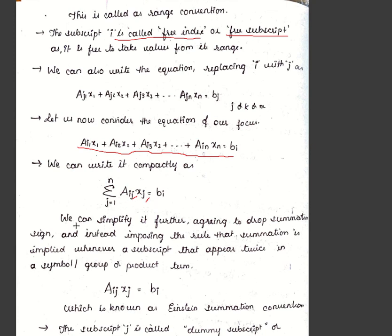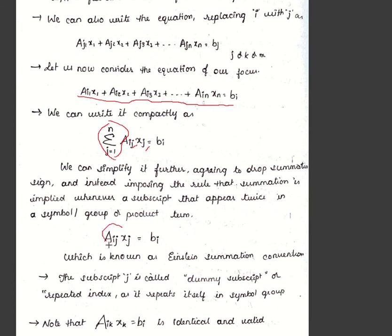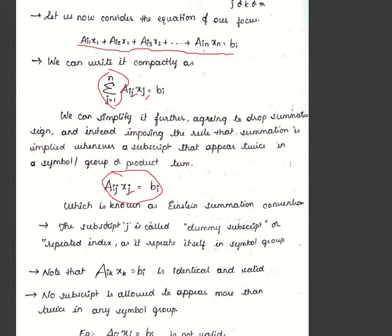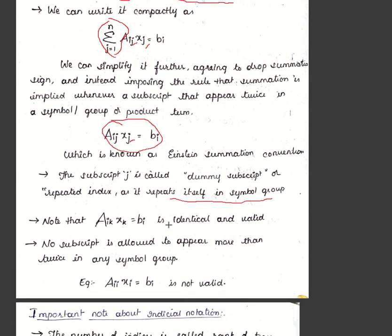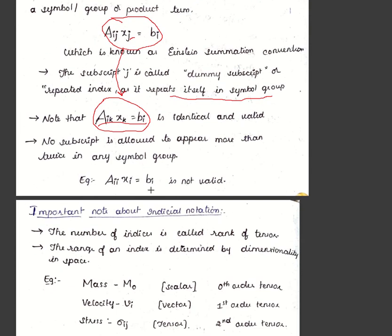According to Einstein's summation convention, we drop the summation sign and write simply aij·xj = bi, where j is a repeated (dummy) index implying summation. The subscript j is called a dummy subscript or repeated index. Note that aik·xk = bi is identical and valid — any dummy index letter can be replaced. Importantly, no subscript is allowed to appear more than twice in any symbol group; for example, aii·xi = bi is not valid.